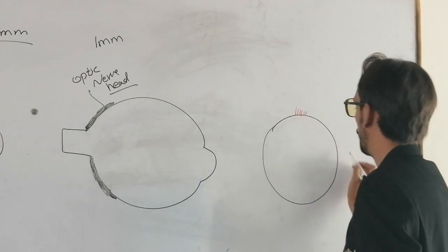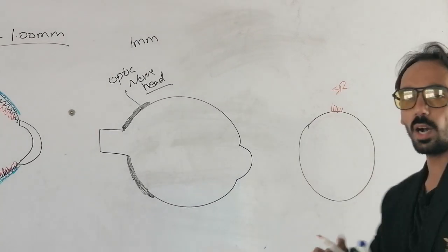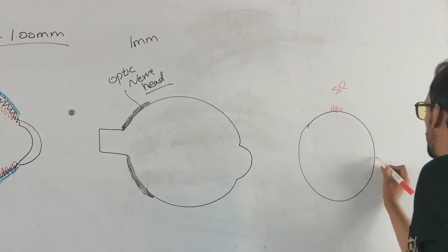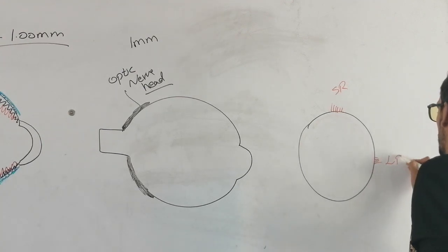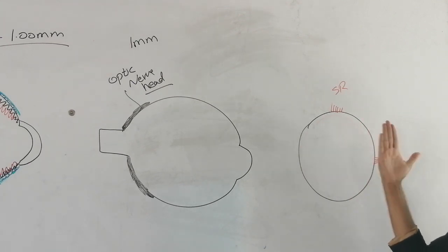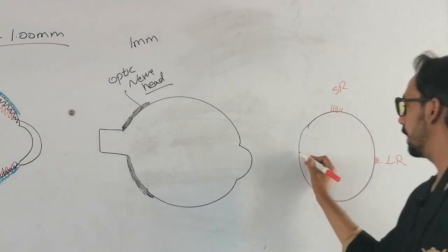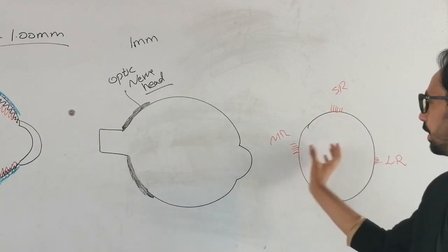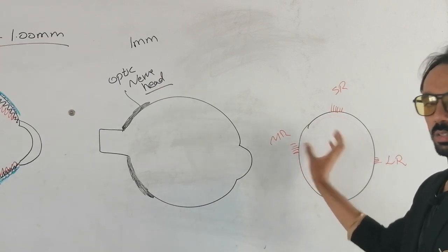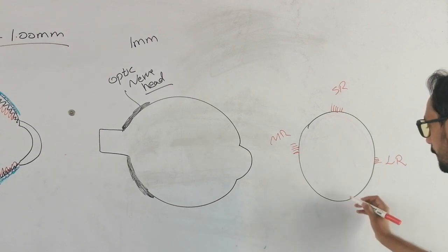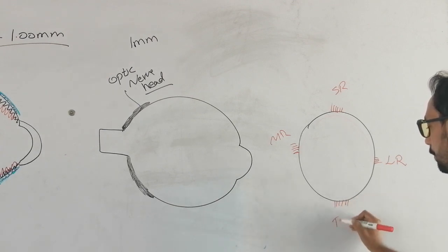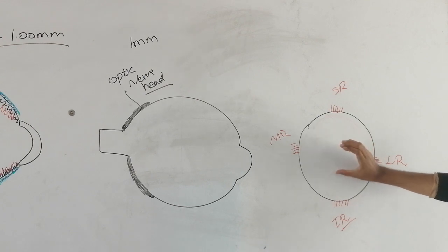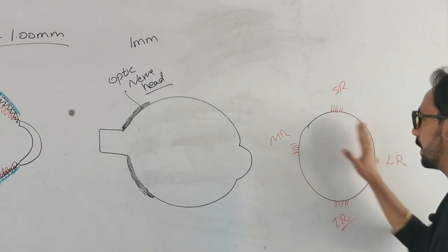This is called superior rectus, which moves the eyeball in the superior direction or elevates the eyeball. This is the lateral rectus, which moves the eyeball in the lateral direction, in the lateral gaze. This is called medial rectus, which moves the eyeball towards the nose. And this is called inferior rectus, which will move the eyeball in the downward direction, in depression. So we have these different recti muscles.